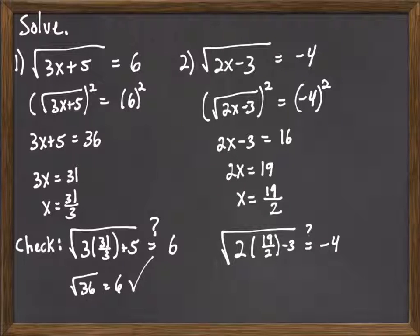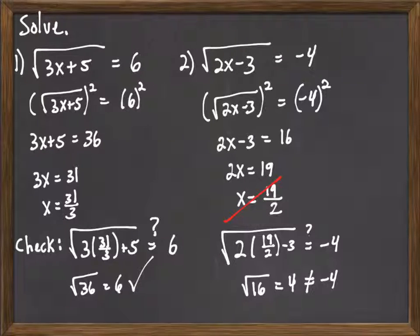So we plug that answer in and test both sides. 2 times 19 halves, the 2s will cancel out, we get 19. 19 minus 3 is the square root of 16. Square root of 16 is 4, but 4 is not equal to negative 4. So what that tells us is our answer there, 19 halves, is not a solution.